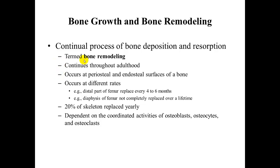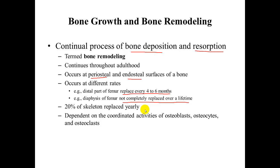Bone remodeling is a continual process of bone deposition and resorption that typically occurs at the same time. It continues throughout adulthood, occurring at the periosteal and endosteal surfaces of a bone at different rates. For example, parts of the femur are replaced every four to six months on average, whereas the diaphysis of a femur is never completely replaced over a lifetime. On average, approximately 20% of an individual's skeleton is replaced yearly. This is dependent on the coordinated activities of osteoblasts (which build bone), osteoclasts (which resorb bone), and osteocytes (which help maintain bone).